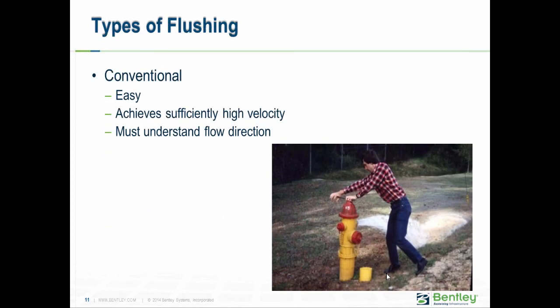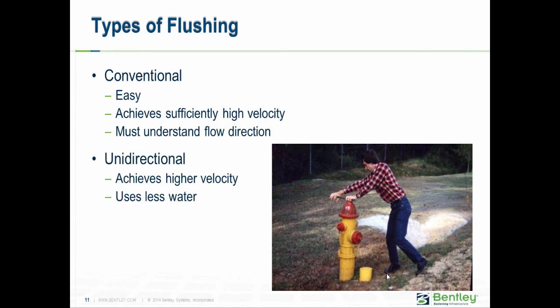The types of flushing: conventional is very easy to set up and you can get by with a minimal crew. Usually you can get a high enough velocity or quality, but you should model this ahead of time to understand the direction of flow and where you're moving the water. Unidirectional flushing takes a lot more work to set up, but uses less water and yields much higher velocities. Where you need really high velocities or precise flow direction control, unidirectional flushing can be worth the effort. My usual approach is to try conventional flushing first, and if you can't get high enough quality or velocity, then look to unidirectional flushing.